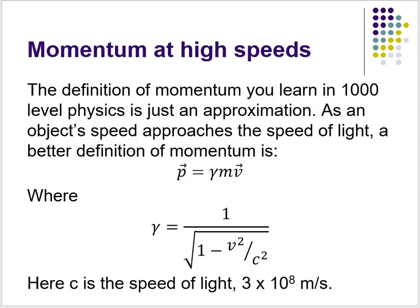For most everyday speeds, since γ = 1 / √(1 − v²/c²), if you're going only a few hundred or even a few thousand meters per second, the ratio v²/c² is something very close to zero. That means for everyday speeds, gamma is very close to 1, so the approximation p = mv that you learned in 1000-level physics works very well.